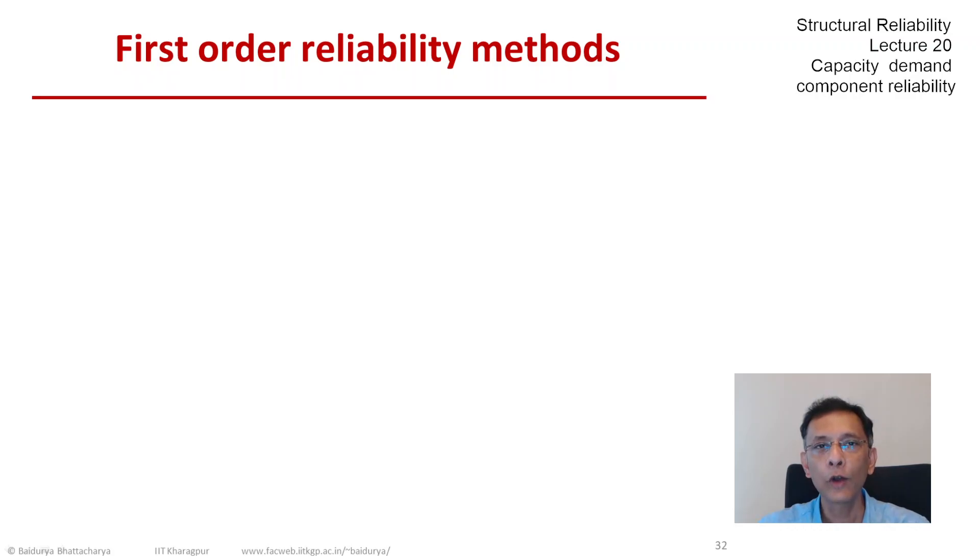From this point forward, we are going to stay confined to this independent standard normal space. Let us take stock of how far we have come. We have mapped the basic variables x onto this independent standard normal space u, and hence we have mapped the limit state function g of x onto another function h of u.